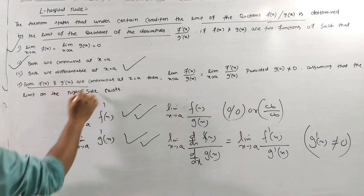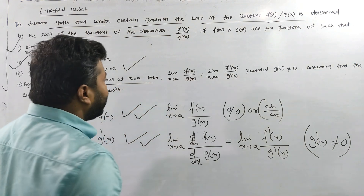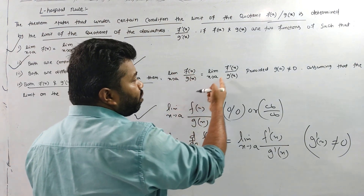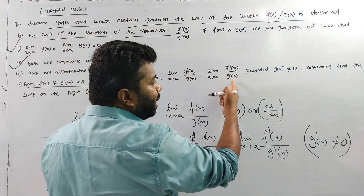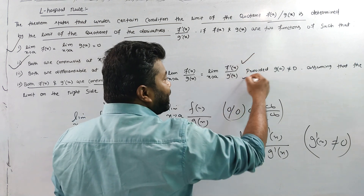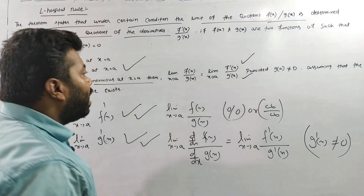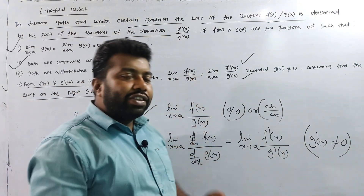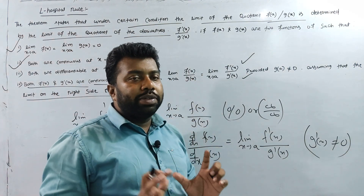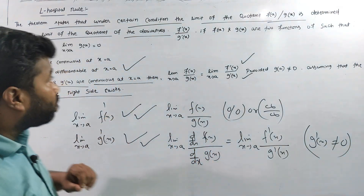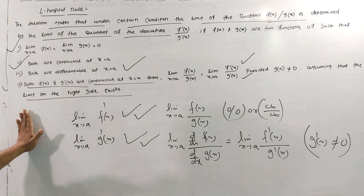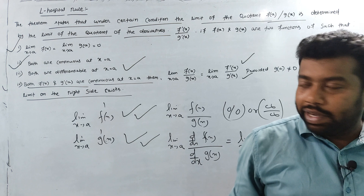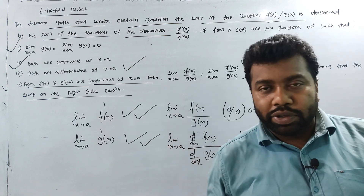Both f'(x) and g'(x) are continuous at x equal to a. Then the limit as x tends to a of f(x)/g(x) equals f'(x)/g'(x), assuming the right-hand limit exists. This is the L'Hôpital rule concept.